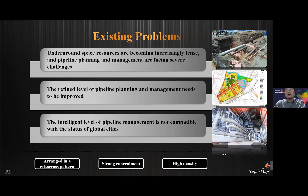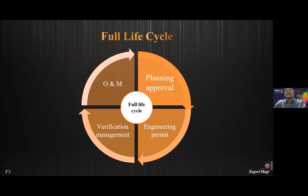The refined level of pipeline planning and management needs to be improved, and the intelligent level of pipeline management is not compatible with the status of global cities. The current urban pipe network also has the following three features: arranged in a crisscross pattern, strong complexity, and high density. In this report, we will discuss how GIS can accurately manage the pipe network across the full life cycle — from planning approval, to engineering pre-image, verification management, and finally O&M operation and maintenance.